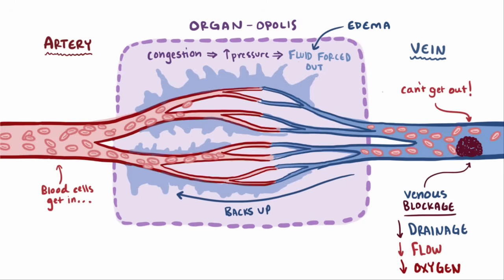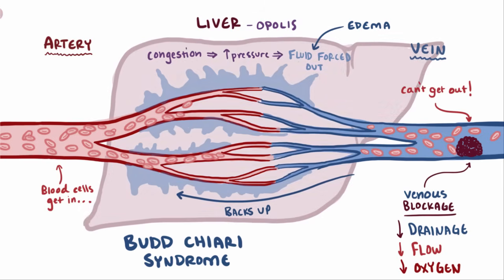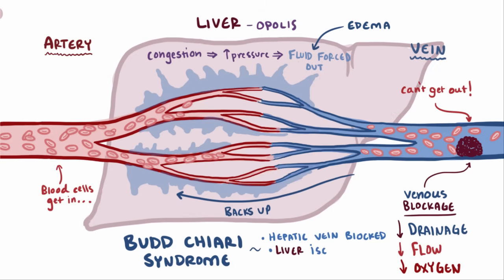This example is very similar to Budd-Chiari syndrome, where the hepatic veins that drain blood out of the liver are blocked by a thrombosis or clot. Blood can't flow through the liver and the liver tissue becomes ischemic, leading to liver edema and hepatomegaly, or enlargement of the liver.